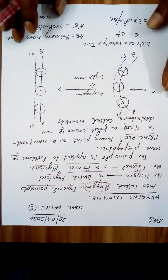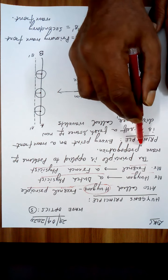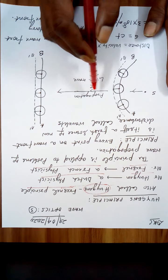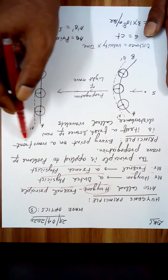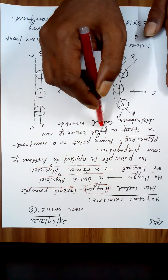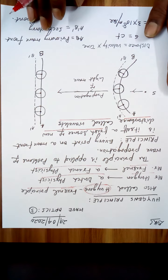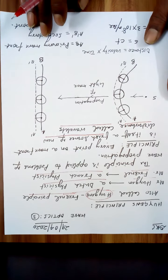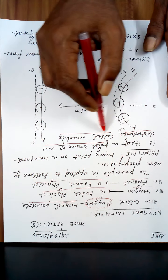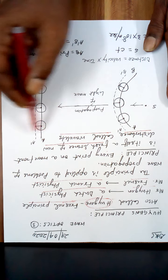What is the principle? This principle is applied to problems of wave propagation. Every point on a wavefront is itself a fresh source of new disturbance called wavelets, and those wavelets are sending out new disturbances in the forward direction.